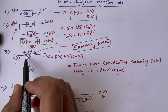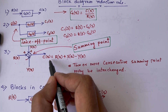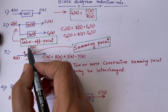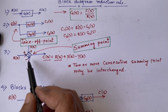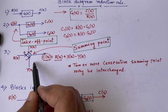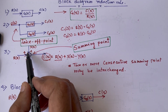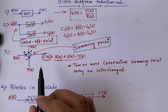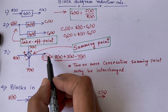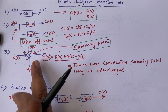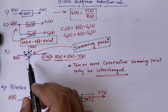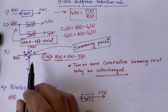The summing point represents the summation of all incoming signals. For example, C(s) = R(s) + X(s) - Y(s), where R(s) and X(s) are positive and Y(s) has a negative sign. If you have two or more consecutive summing points next to each other, they can be interchanged. This is one important rule to remember: consecutive summing points can be swapped.